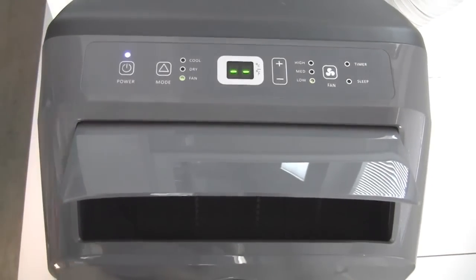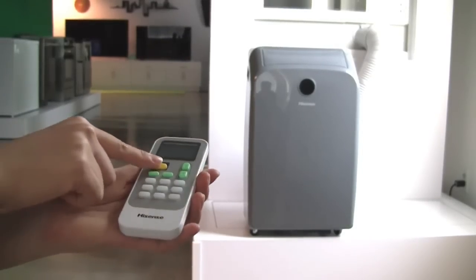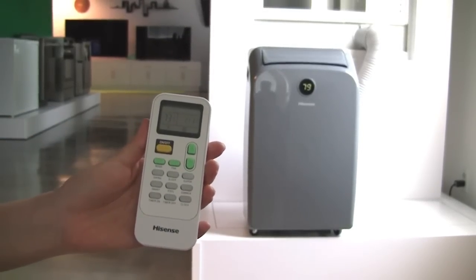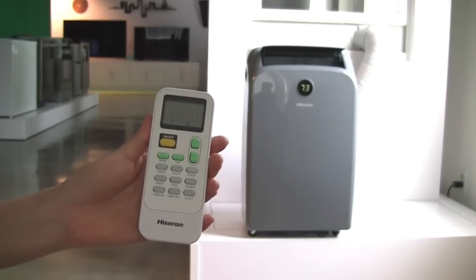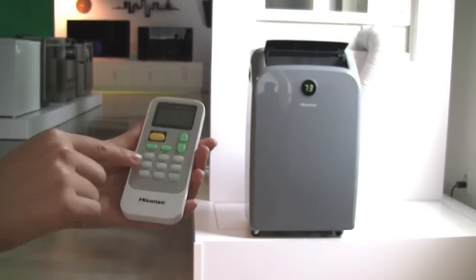You can also use the remote to control the unit. Press the On-Off button to power the unit on. Airflow is automatically adjusted to a preset direction after turning on the unit. The direction of airflow can be adjusted by pressing the Swing button.